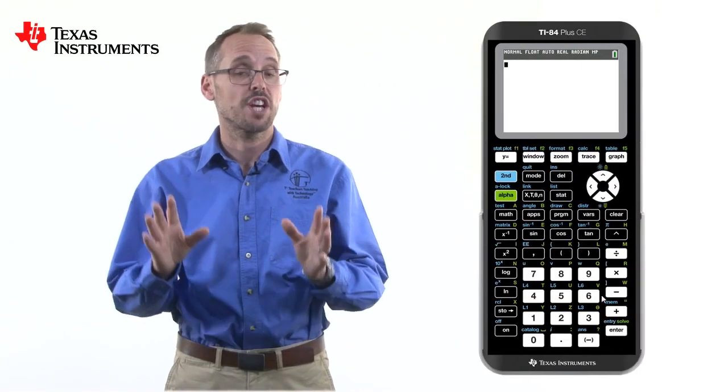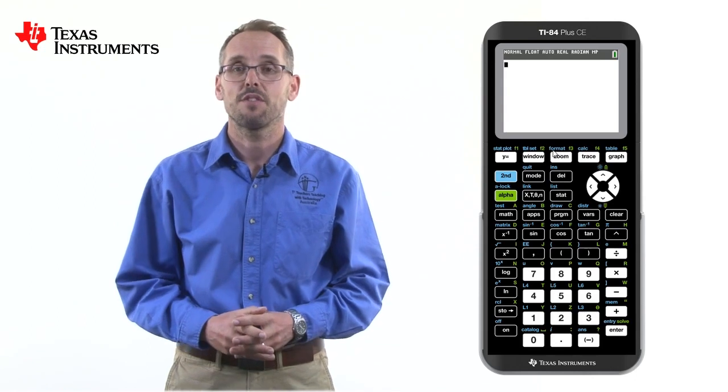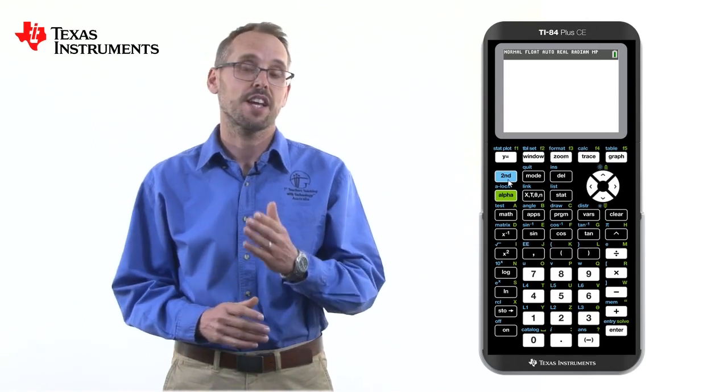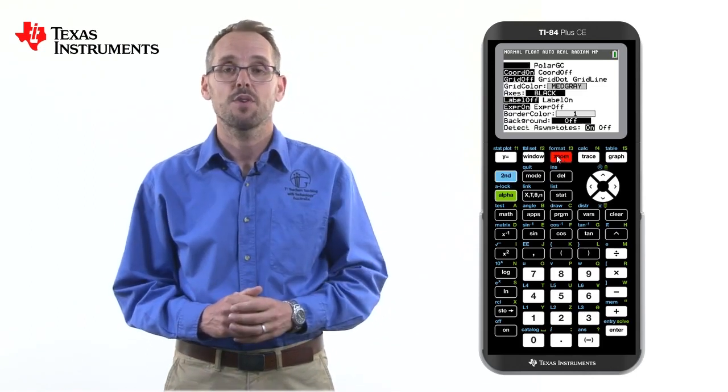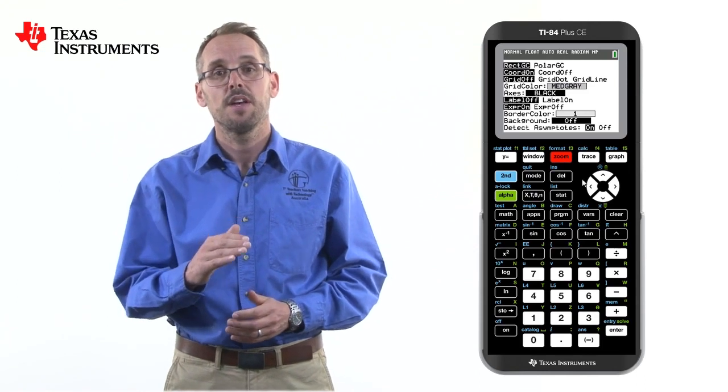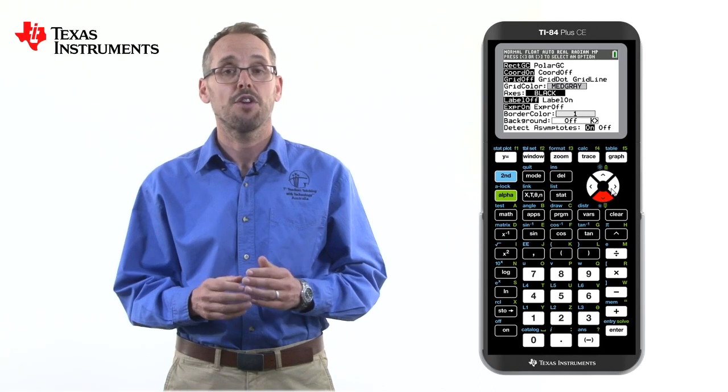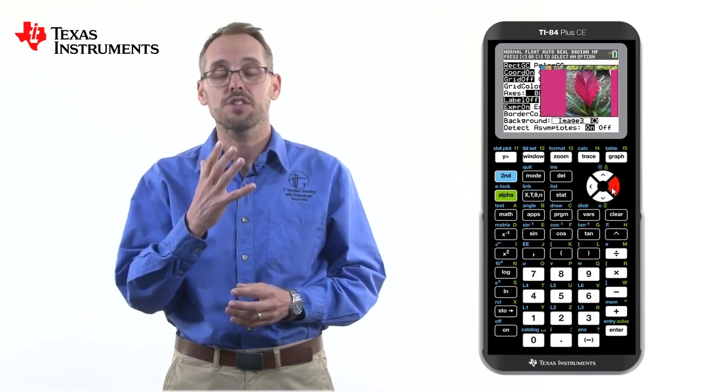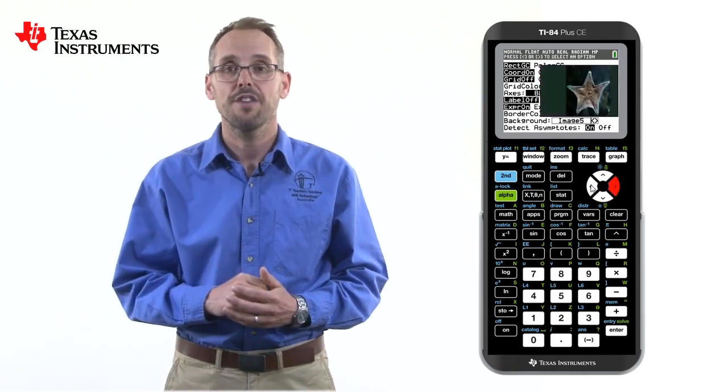How do we put an image onto the graphing screen? Well, we need to change the background. This is found in format. Press second and zoom, and we can see we're into the format screen. Scroll down to background, and then arrow across. On the calculator are five preinstalled images. We're going to focus on number four, the water fountain.